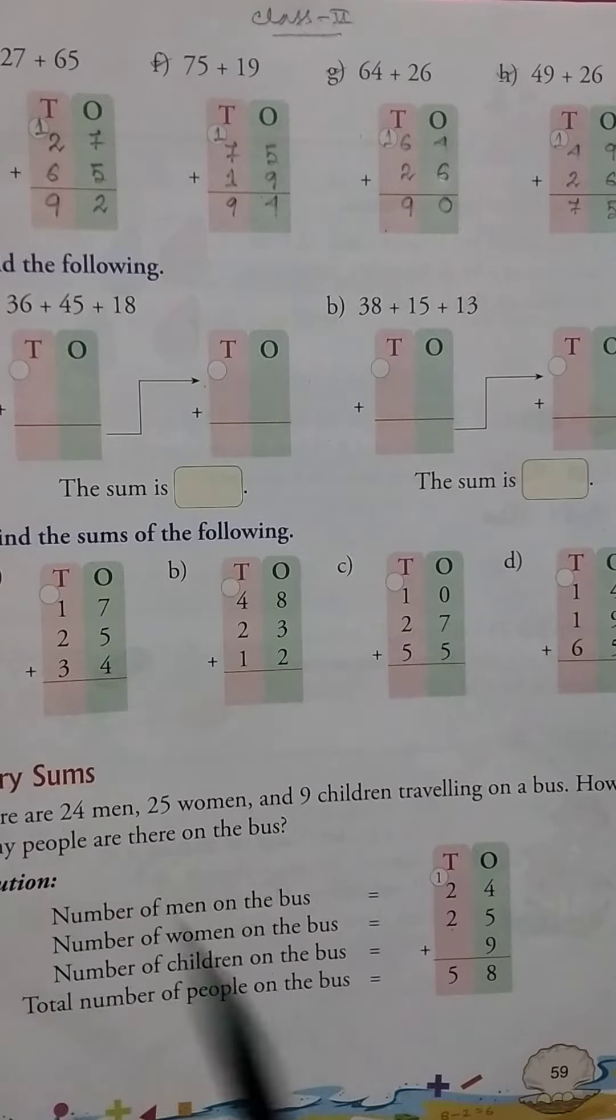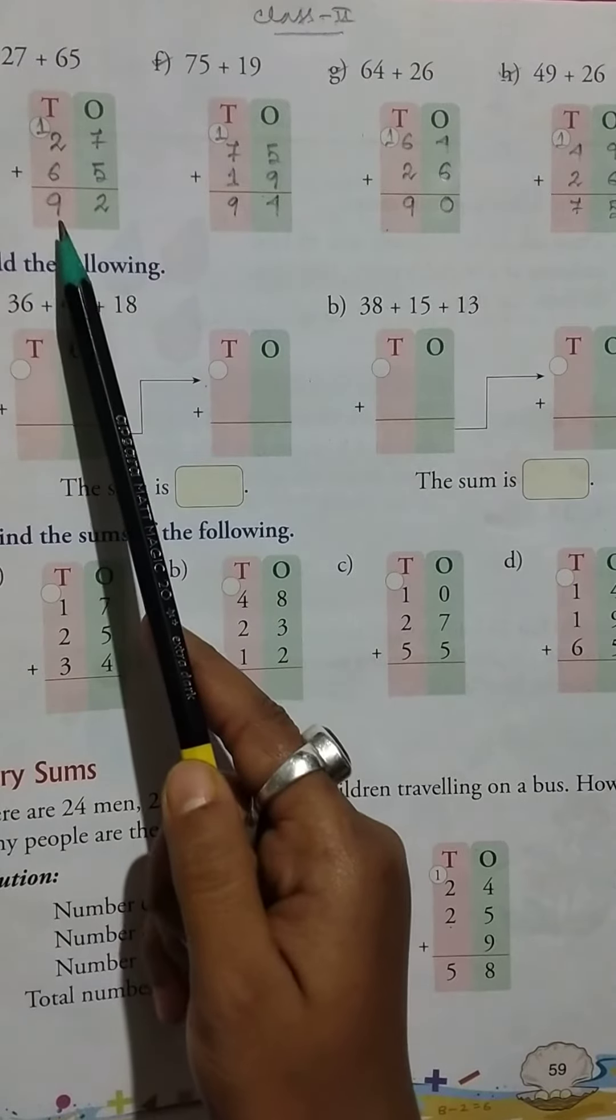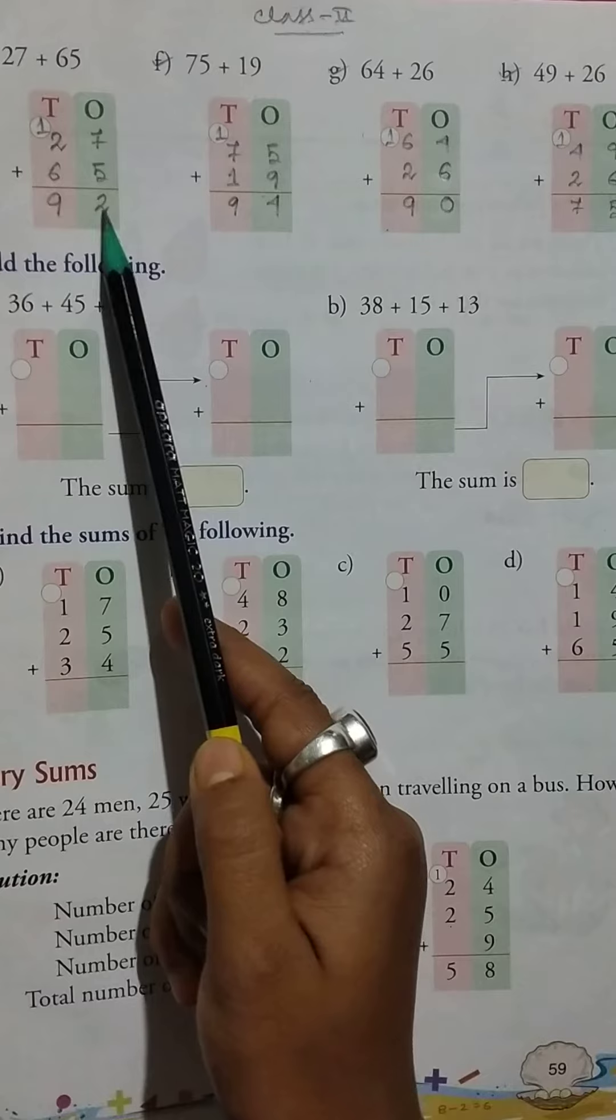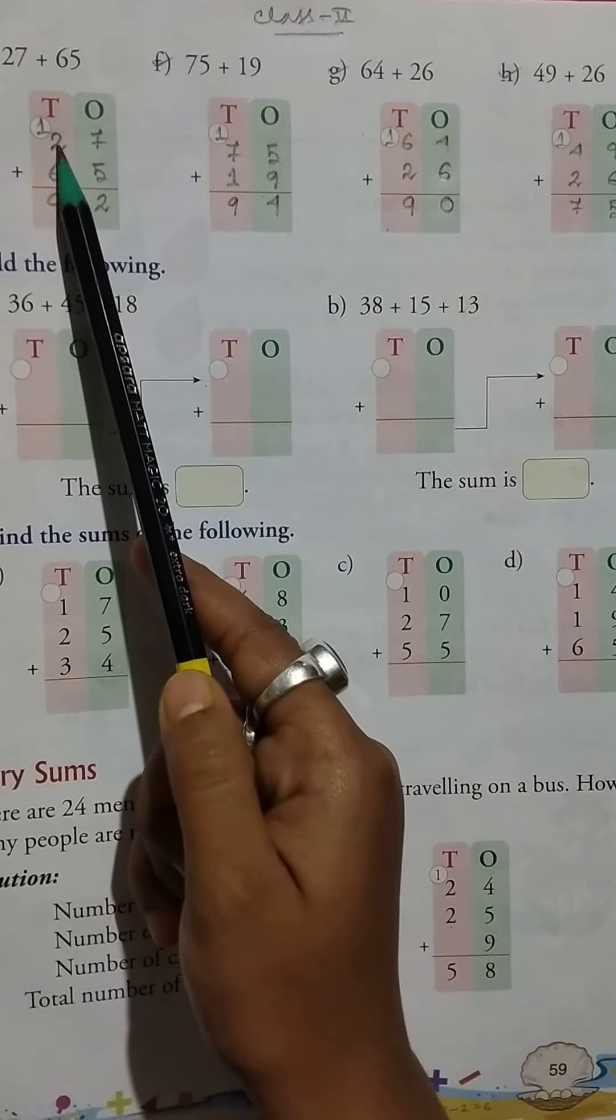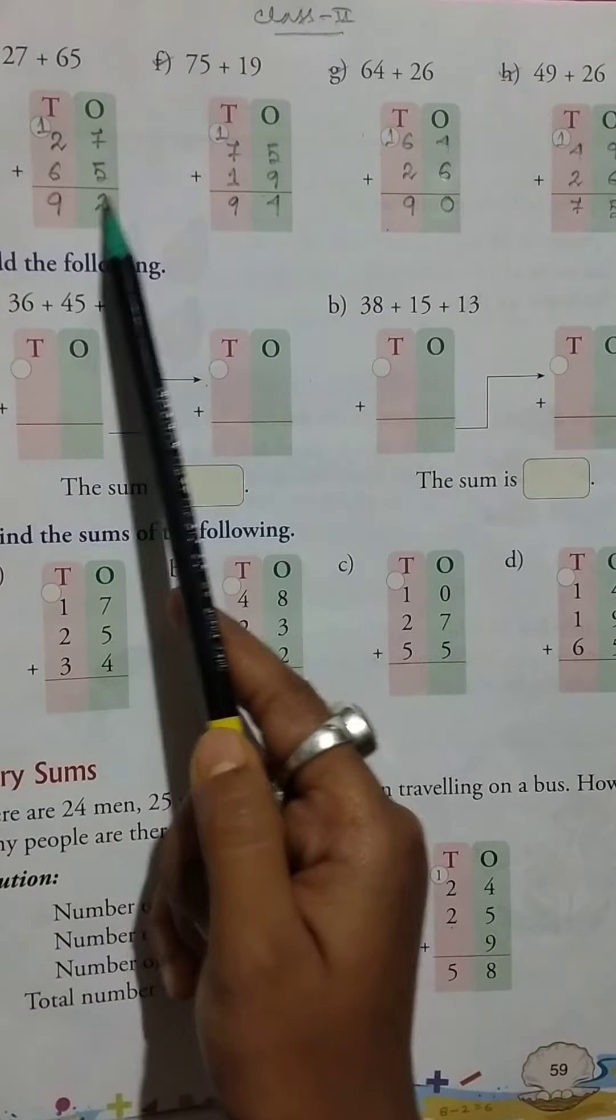Number E: 27 plus 65. The answer is 92. 7 plus 5 equals 12, write 2 here and carry 1. Then 1 plus 2 equals 3, 3 plus 6 equals 9, so we get 92.